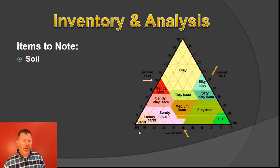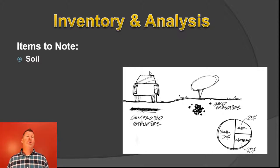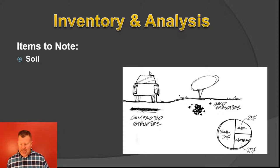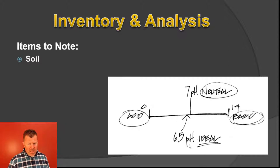Use the soil triangle to determine soil type — that is your inventory. What you're going to do about the soil is your analysis. Is it compacted? You need compacted soil for the driveway, but you need good structure — at least 25% air, 25% water, and 50% soil — for planting. You may need to add soil amendments depending on the soil test: soil conditioner, peat moss, to create a good planting bed. A 6.5 pH is ideal for most plant materials; 7 is neutral, below 7 is acidic, above 7 is basic.